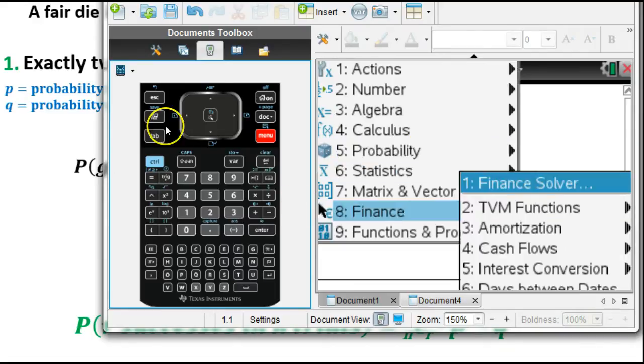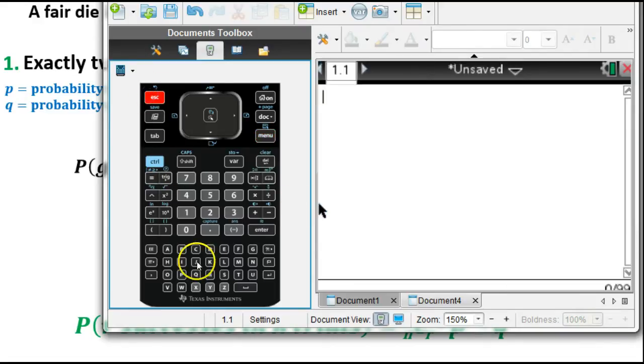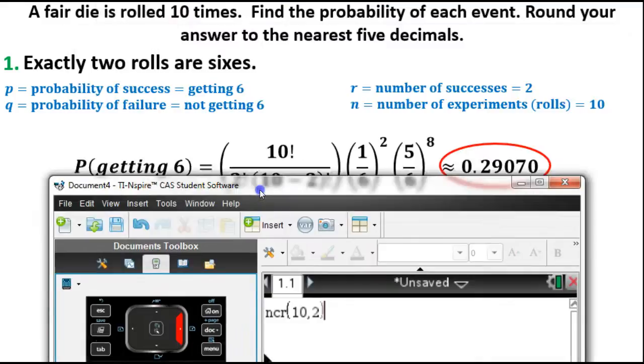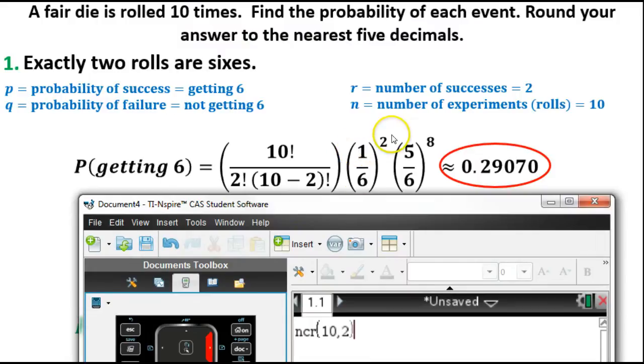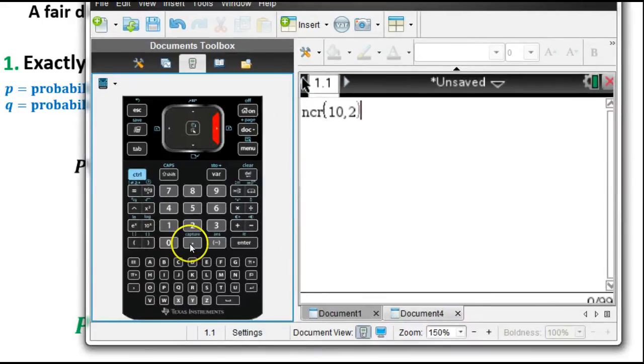You can also just type in NCR. Notice how these are italicized. As soon as I hit this R, it'll know what I'm trying to do and automatically goes into normal font. We're going to do ten choose two, so ten, two is how we'll type that in. Then we need to determine the probability of success. Success is one-sixth squared, there are two of them.